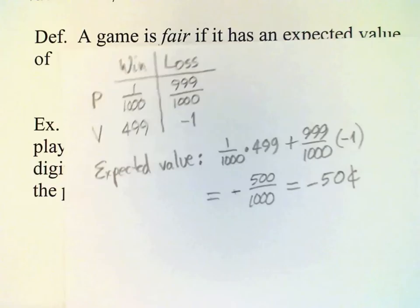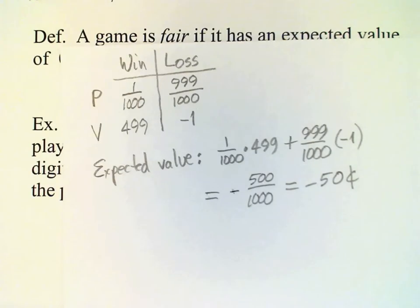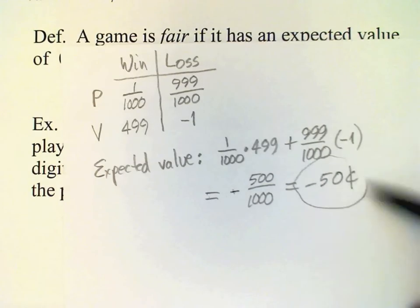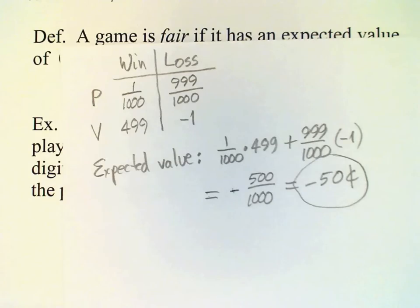Okay, so again, on any given play of this game, you can't lose 50 cents. You're either going to lose your dollar, most likely, or if you're lucky, you will get the $500. So what does this expected value tell us? Well, it tells us if we play this game many times, on average, we're going to lose 50 cents for each time that we play it.